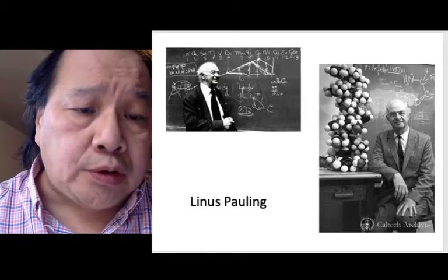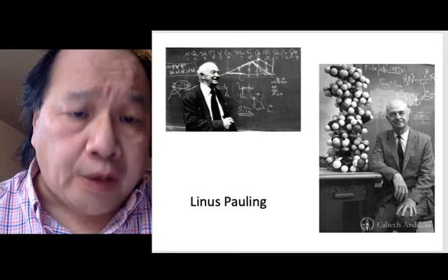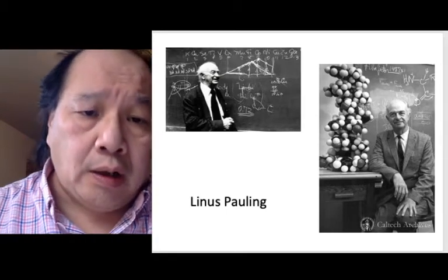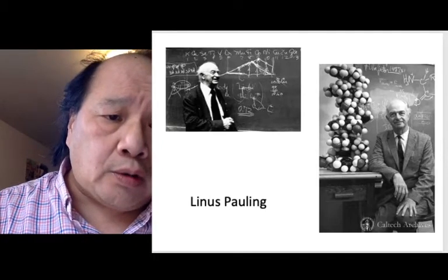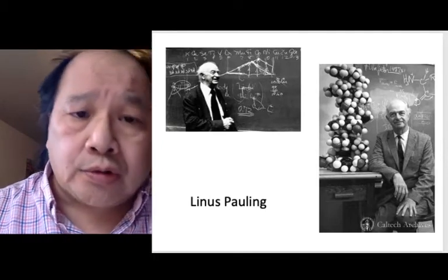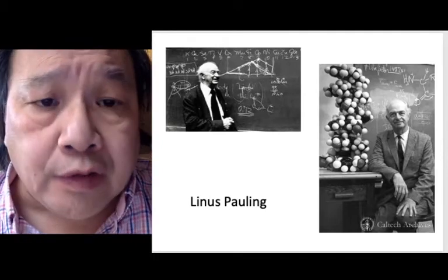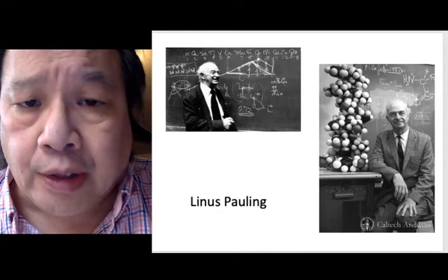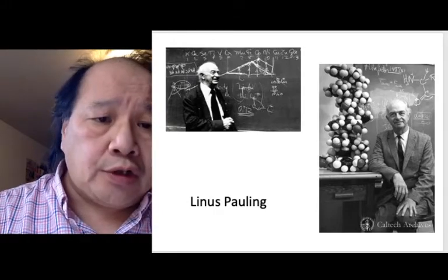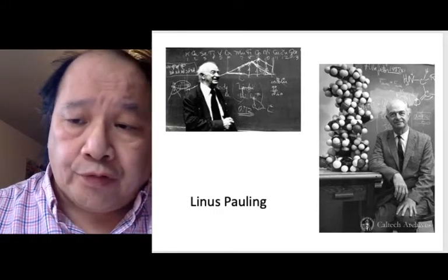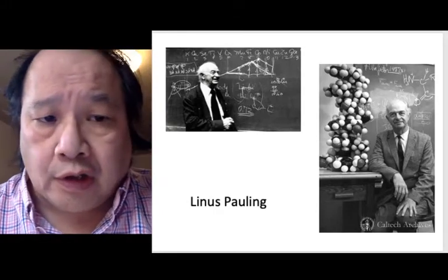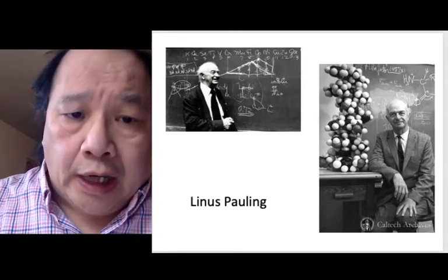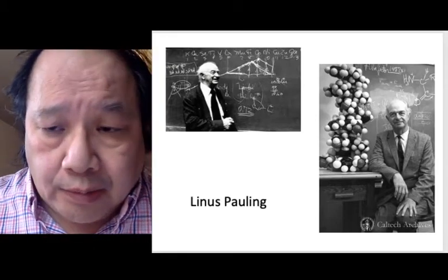Linus Pauling looked at things very simply, but he was always able to find profound consequences — consequences from quasicrystals. The picture on the left is a theory of magnetism that he created. On the right, he started the field of protein folding; he discovered the alpha helix. Okay, that's one gentleman.